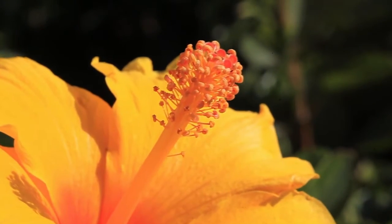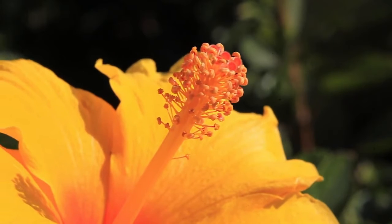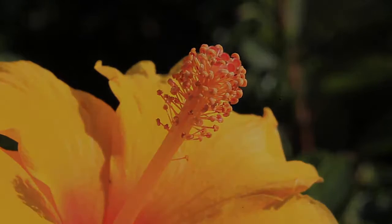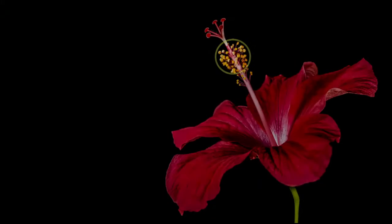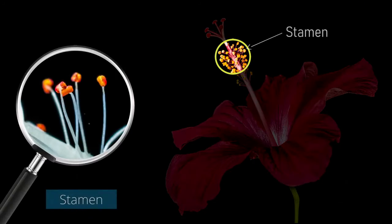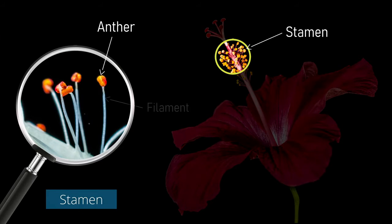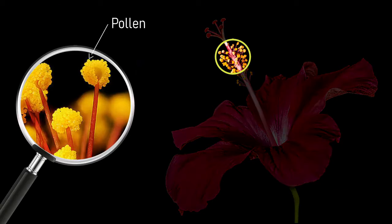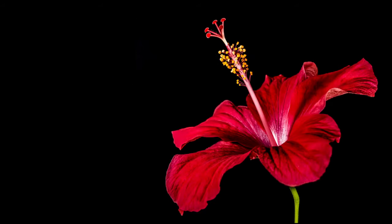At the center of the flower we find the male and the female parts. Most plants have both these parts in the same flower. The male part is called the stamen. It is made up of an anther which is supported by a long filament. The pollen is produced in the anther. Pollen is necessary for the formation of seeds.